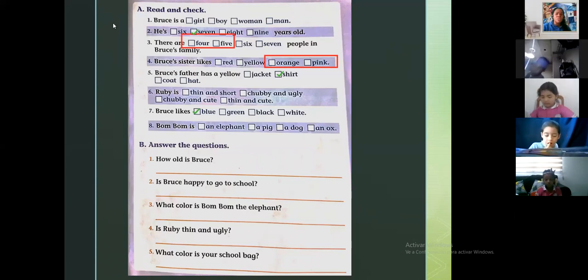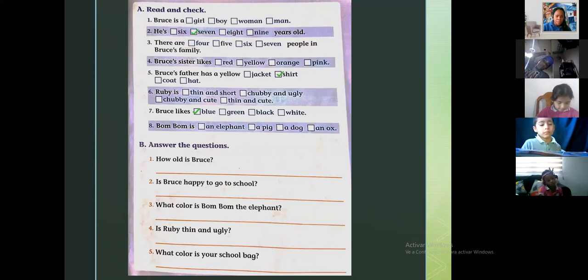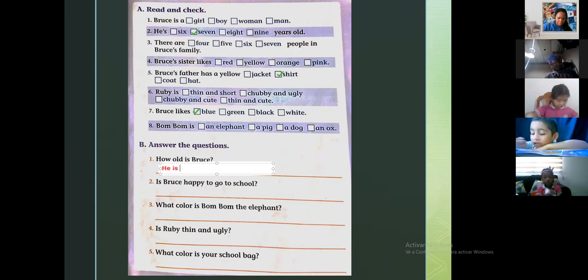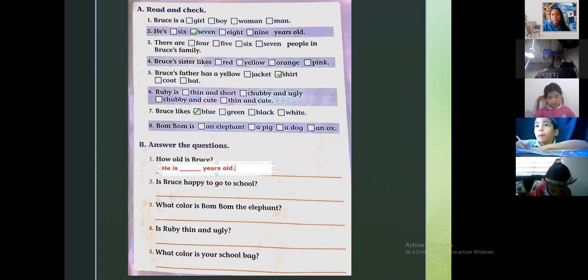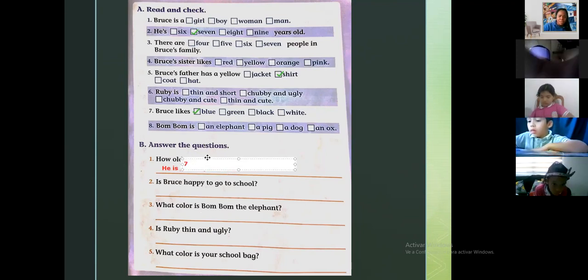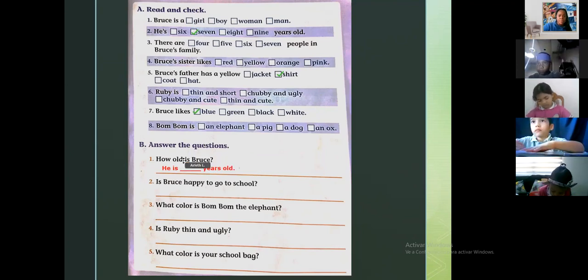Okay chicos so let's continue. Vamos a la parte de abajo ahora. How old is Bruce? Cuántos años tiene Bruce? Aquí está la respuesta de esto. Yo le voy a escribir rapidito. He is, aquí en esta línea usted va a ponerle el número or years old. Puede escribirlo en número o puede escribirlo en letra. Aquí está el número, ya lo tenemos, entonces le ponemos seven porque esa fue la respuesta que yo le di. He is seven years old. Ya sabemos que Bruce tiene siete años. Seven years old.